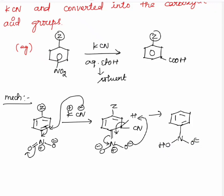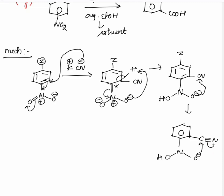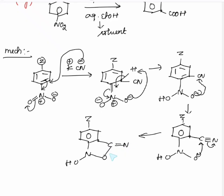Now we have OH here, O minus here, and CN. Now this O minus goes to attack this C triple bond N. Here we get N, O, H, with a double bond N, C double bond N, and C double bond N minus — this negative charge.